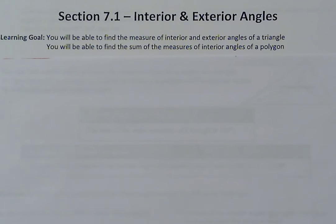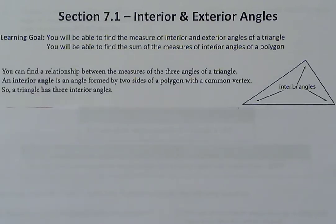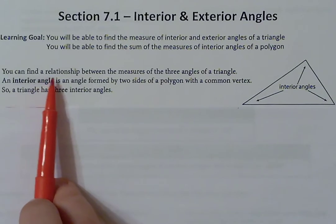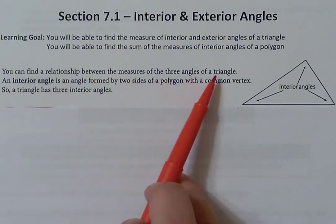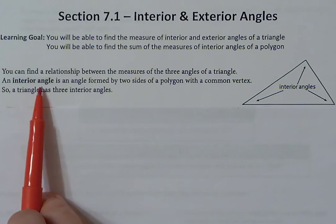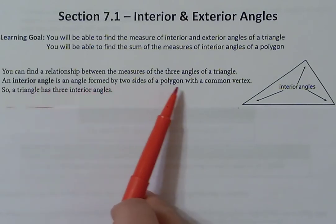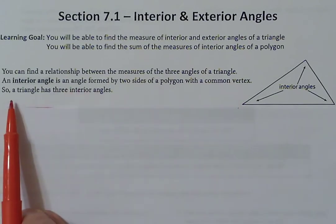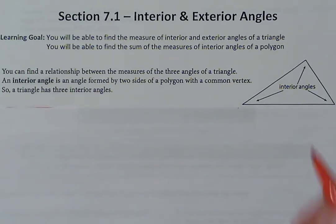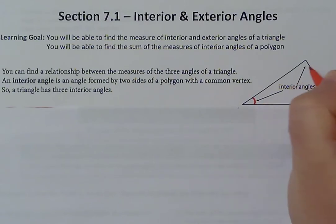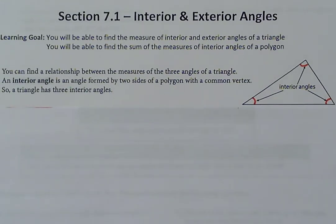First we're going to start with interior, and then we'll move into exterior. So let's take a look at interior angles first. You can find a relationship between the measures of the three angles of a triangle. An interior angle is formed by two sides of a polygon with the common vertex. A triangle has three interior angles. Interior angles are the angles that are formed inside the shape, so anytime we talk about interior angles, we're talking about angles inside the shape.